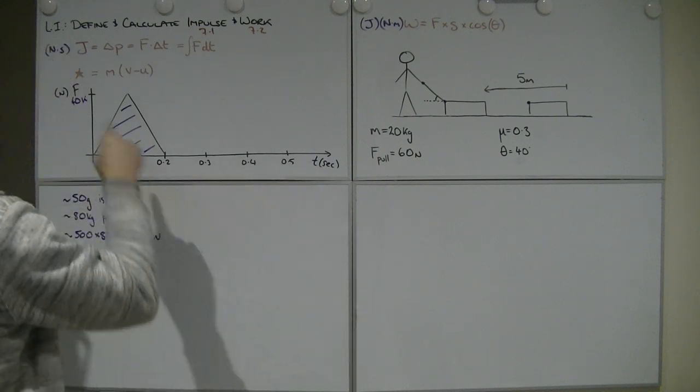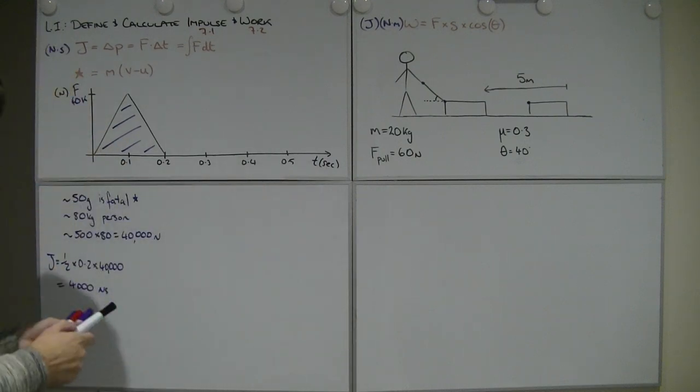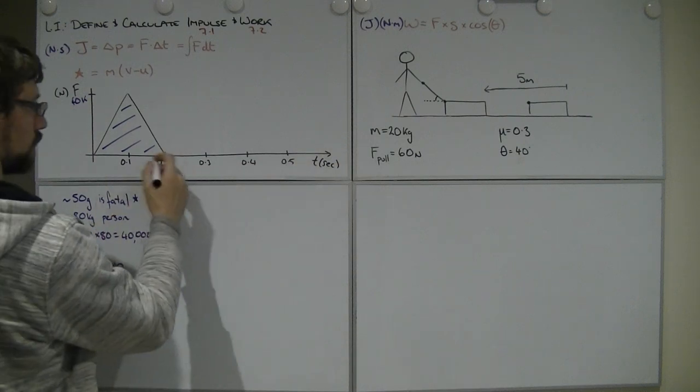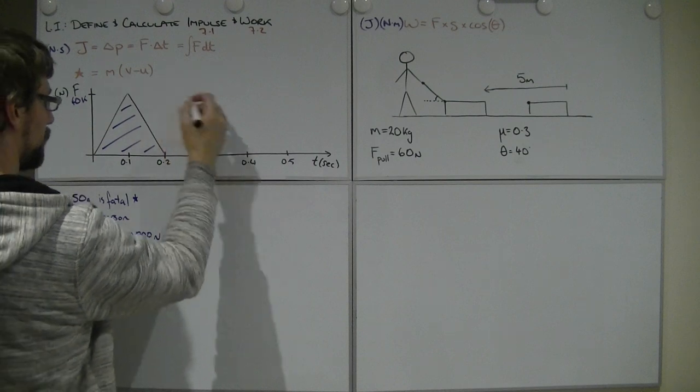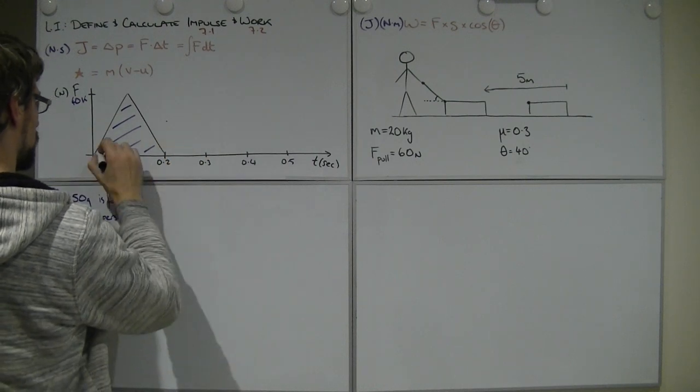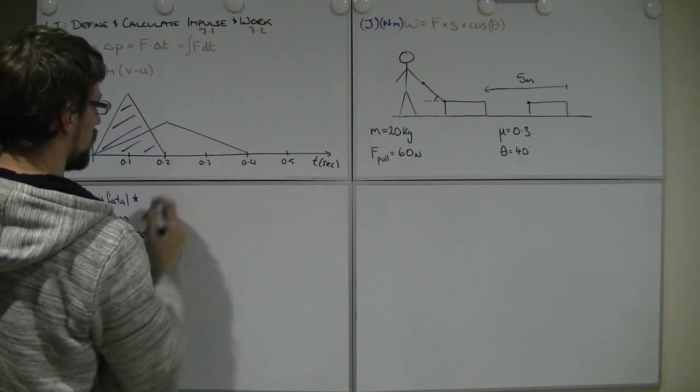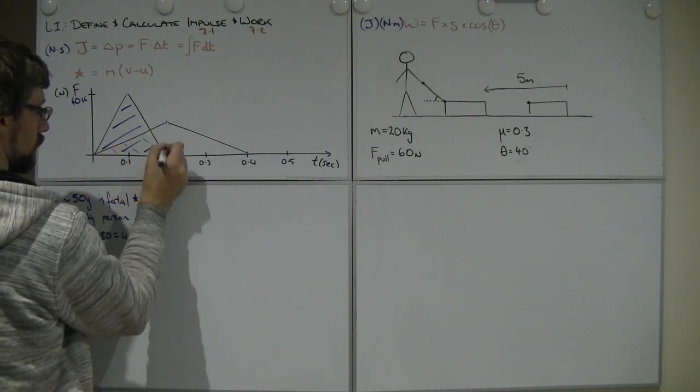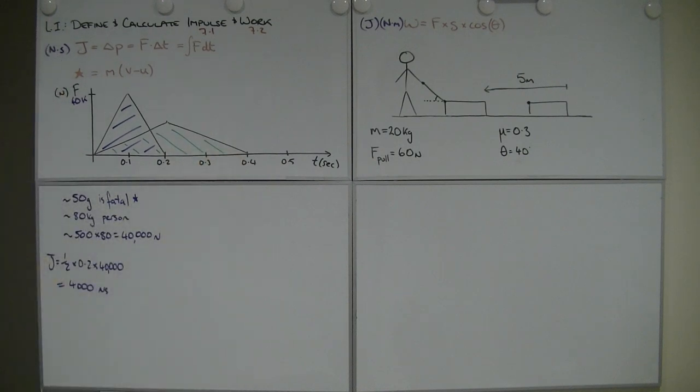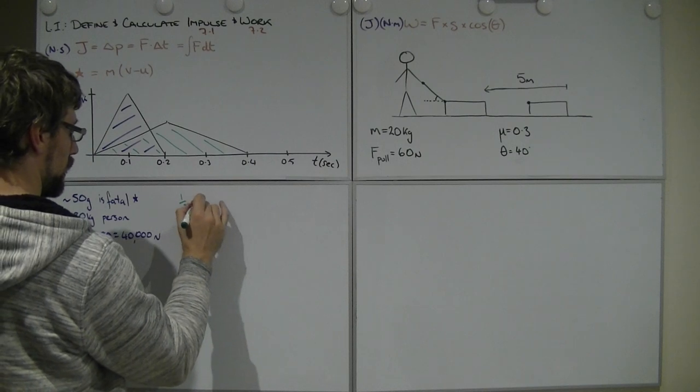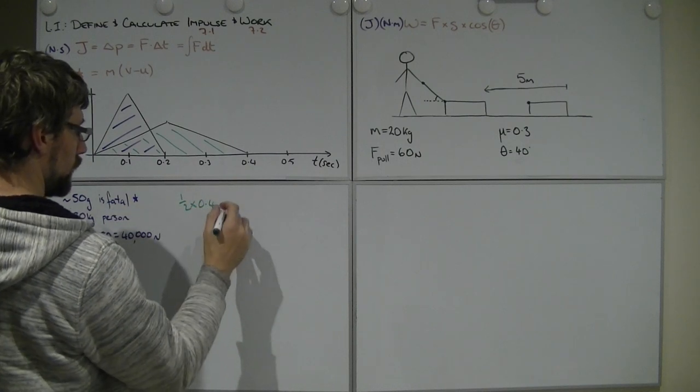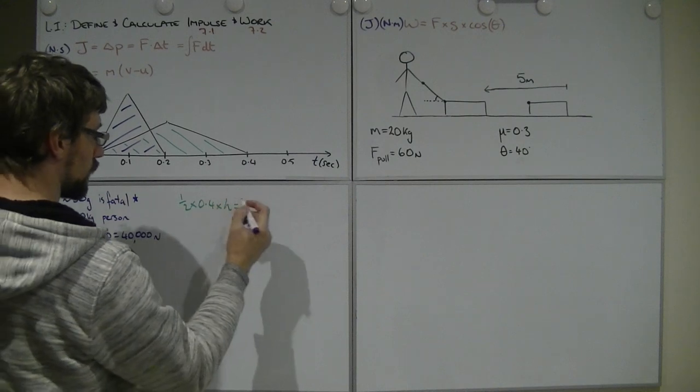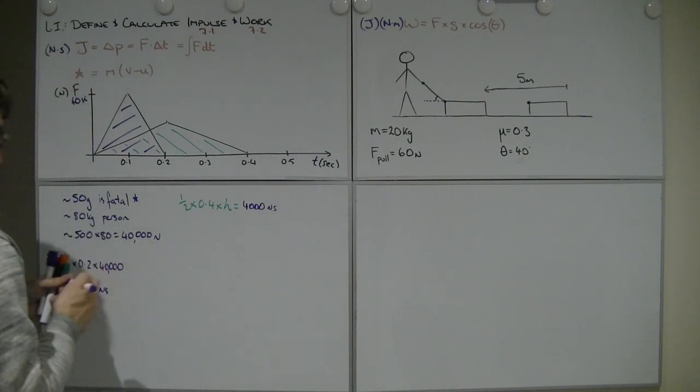The airbag means that you slowly disperse the energy over more time. Our impulse isn't going to change, or at least we'll assume that it won't change. What we can do, though, is spread out this impulse over more time. Let's take a look at this. Now we've got this area.